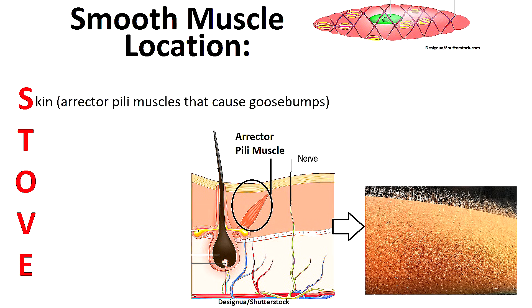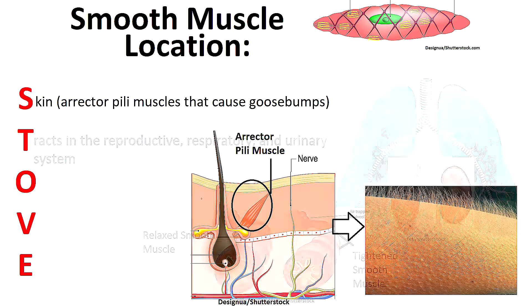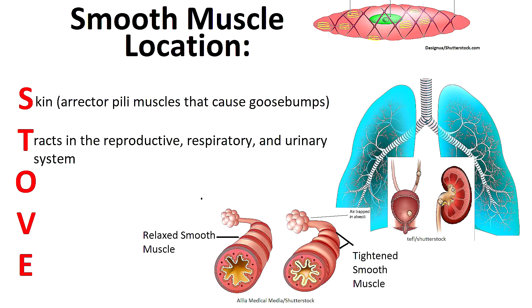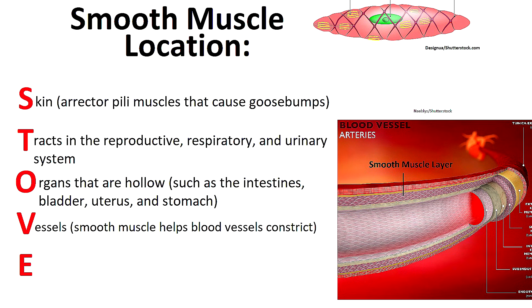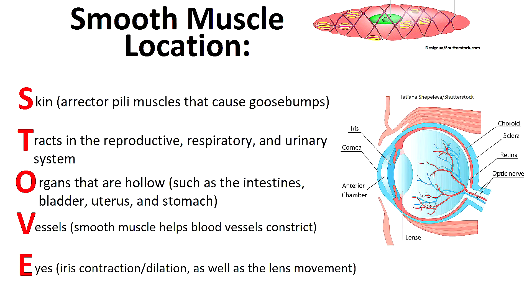S stands for skin, specifically the erector pili muscles that cause goosebumps. T stands for tracts found in the reproductive, respiratory, and urinary systems. O stands for organs that are hollow, such as the intestines, bladder, uterus, and stomach. V stands for vessels, as smooth muscle helps blood vessels constrict. And E stands for eyes — specifically smooth muscle helps with iris contraction as well as movement of the lens.